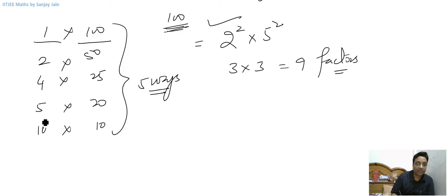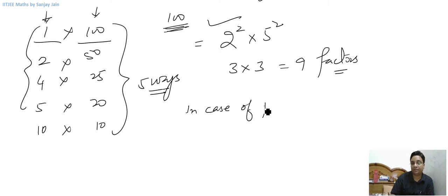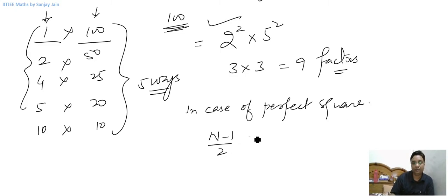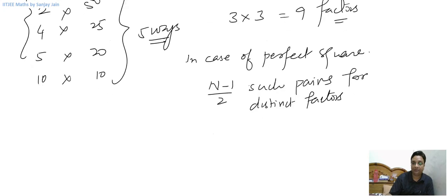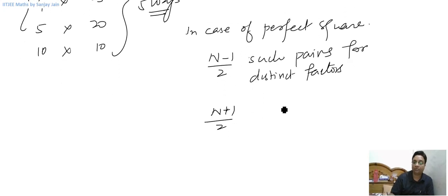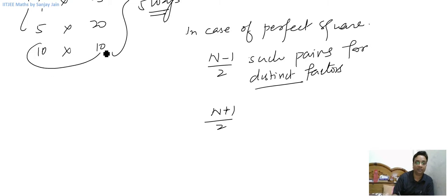There are 4 ways in which distinct factors are being multiplied. So in case of perfect squares, we will get (n−1)/2 such pairs if we consider distinct factors only. We will have (n+1)/2 ways of writing it as a product of factors if we can also consider the same factors — like 10 into 10 — making the total number of ways equal to 5.